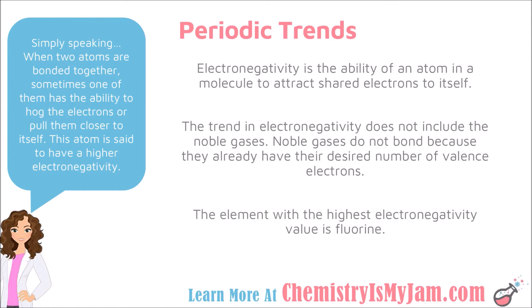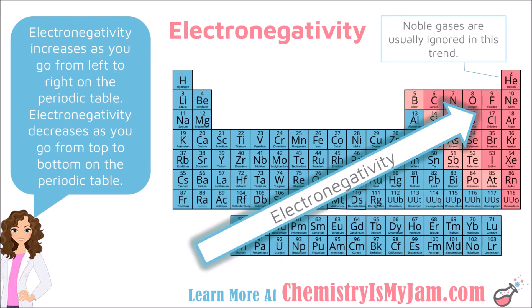The element with the highest electronegativity value is fluorine. Electronegativity increases from left to right and from bottom to top. This trend ignores the noble gases because they never bond with other atoms, and the highest electronegativity value on the periodic table belongs to fluorine.